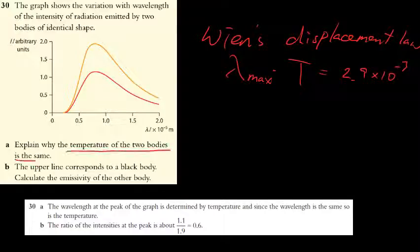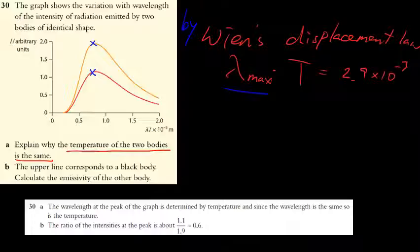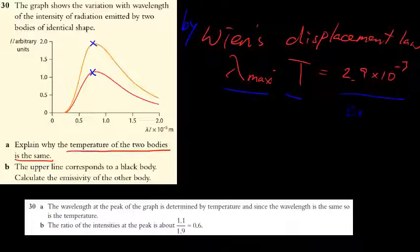Question 30 asks why two bodies have the same temperature given a graph. From the graph, the peak wavelength (λ_max) of maximum intensity is the same for both. By Wien's Displacement Law, λ_max × T = constant, so if both have the same peak wavelength, they have the same temperature. Make sure to quote Wien's Displacement Law by name in your answer.